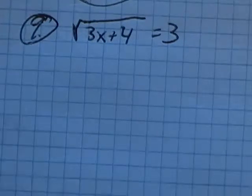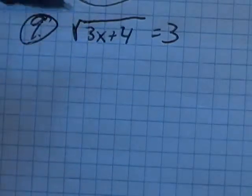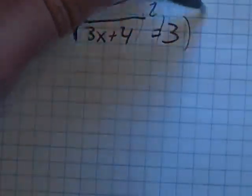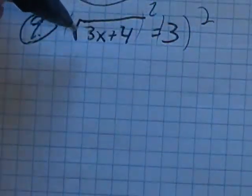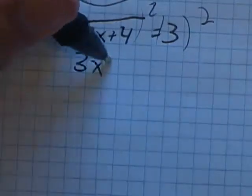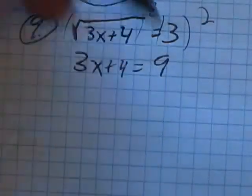So I'm going to do it. If I go to solve this, first thing I'm going to do is square both sides. So if I square both sides to get rid of that square root, I have 3x plus 4 equals 3 squared, which is 9.